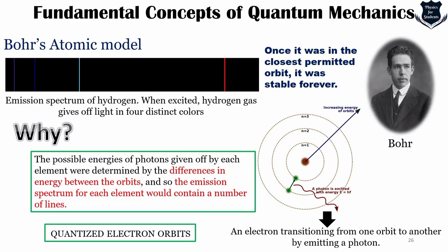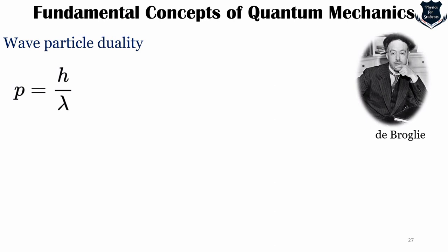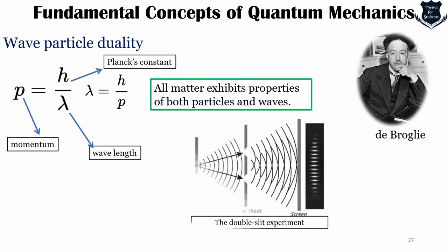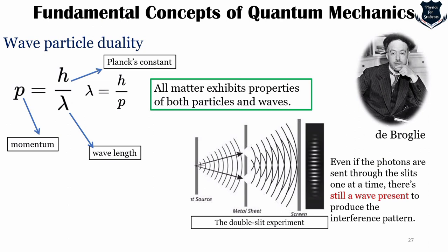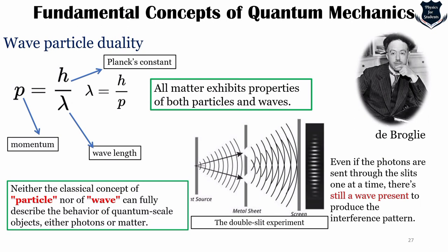Another fundamental concept is de Broglie wave-particle duality. Just as light has both wave and particle properties, matter also has wave-like properties. All matter exhibits properties of both particles and waves; the de Broglie wavelength λ = h/p relates momentum and wavelength. This has been proven through Thomas Young's double-slit experiment, where even photons sent through slits one at a time still produce an interference pattern. Neither the classical concept of particle nor wave fully describes quantum-scale objects.